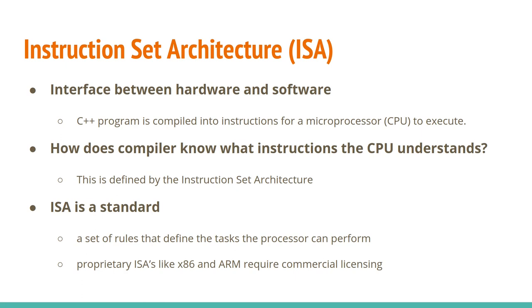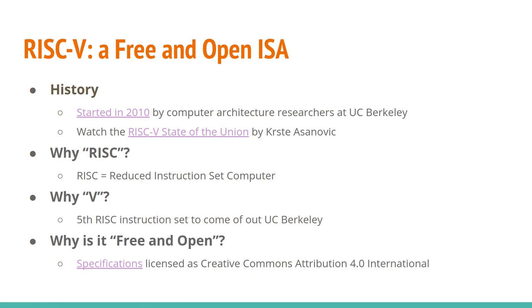I wanted to talk about RISC-V today. It's an instruction set or ISA — the interface between hardware and software. For example, you have a C++ program and it gets compiled into instructions for your processor to execute. The compiler knows what instructions the CPU understands because of the instruction set architecture. The ISA is a standard — a set of rules defining the tasks that the processor can perform. RISC-V started about 10 years ago at UC Berkeley by a group of computer researchers led by Krste Asanović, who gives a talk called the RISC-V State of the Union a couple times a year.